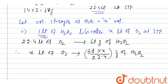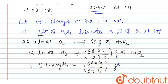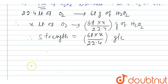Since we have taken 1 liter of hydrogen peroxide, 1 liter of the solution contains (68X / 22.4) grams. The number of grams of solute per liter of solution is the strength. Therefore, strength of hydrogen peroxide = 68X / 22.4 grams per liter. Normality = strength / equivalent mass.